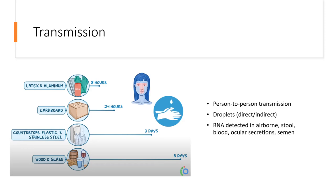Other than droplets, viral RNA has been detected in stools, blood, ocular secretions, semen, and on surfaces of rooms where airborne-generating procedures have taken place. Airborne-generating procedures include CPAP, BiPAP, NG tube insertion, suctioning, intubation, ventilation, and endoscopic procedures. However, the detection of RNA does not necessarily mean it is infectious, and there is ongoing research to correlate RNA detection with viral transmission.